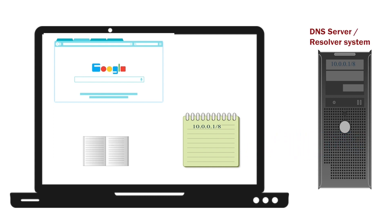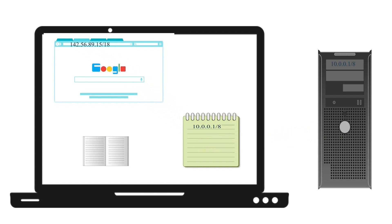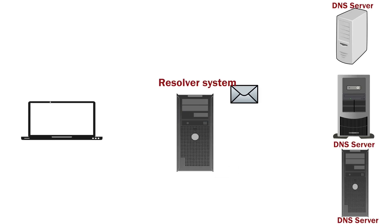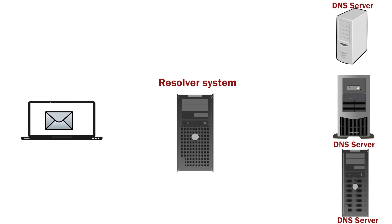If the resolver system is a DNS server, it checks its database, finds the IP address associated with the name google.com, creates a reply message that includes that IP address, and sends the message back to the system which sent the query. If the resolver system is not a DNS server, it forwards the query to all configured DNS servers in a sequence until it gets the IP address of the name it is looking for. Once it gets the IP address of the name, it does not send the query to the next DNS server for that name.